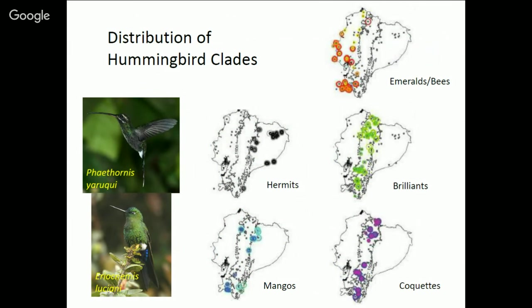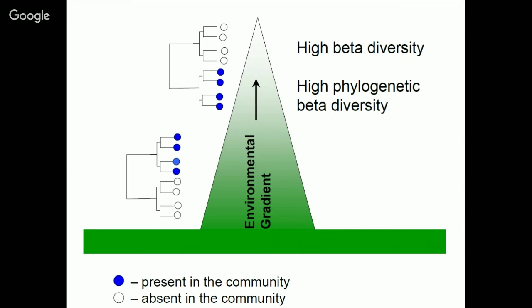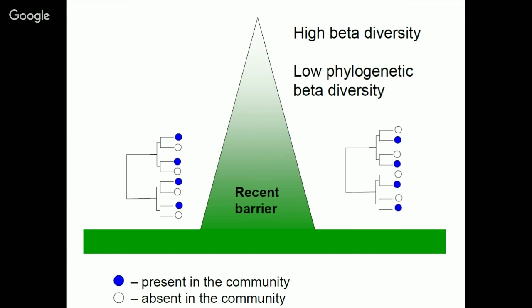Distribution of hummingbird clades varies across elevations, with hermits being in the lowlands, brilliants and coquettes being at high elevations, emeralds and bees being in the lowlands but predominantly on the west slope, and finally emeralds being at mid elevations. If we study this system in a beta diversity framework, the Andes presents a strong environmental gradient. Given some niche conservatism, where clades might be restricted to certain parts of that environmental gradient, we might expect to see high beta diversity and high phylogenetic diversity as we move across the gradient. In contrast, across the barrier of isolation, especially if it's a recent barrier, we might expect high beta diversity but low phylogenetic beta diversity, because essentially sister taxa are replacing each other.